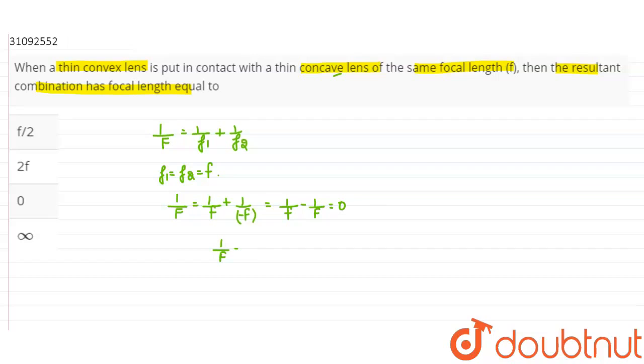So, 1 by f is 0. Then, f is 1 by 0, that is infinity. So, the focal length of this combination is infinity. This will be our correct answer.